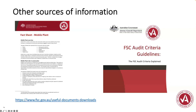Other sources of information — I strongly encourage you to go to the OFSC website. There is an entire fact sheet on mobile plant, around 17 or 18 pages, that goes through each criteria in detail about what companies can do. It's helpful when preparing for an audit, responding to a corrective action, or reviewing your system in any way. Be conscious that the column in the fact sheet talks about types of things you could do — they're not mandated, just guidance. The ultimate aim is improving the safety of mobile plant on your projects. Also refer to the FSC audit guideline, which I've gone through as part of today's presentation. Thanks everyone.